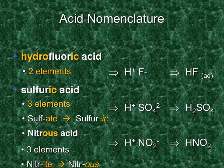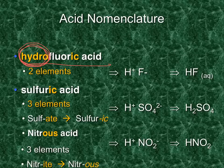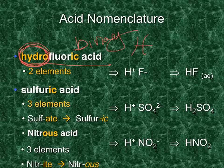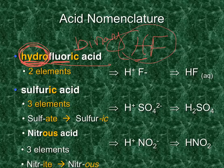Now let's make sure you can go the other way — given a name, write the formula. Anytime you see the prefix 'hydro', 99% of the time it means it's a binary acid made of only two different elements. Any acid formula begins with H, and the prefix 'hydro' tells you there's only one other element. The stem 'fluor' tells us it's fluoride — hydrofluoric acid.